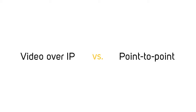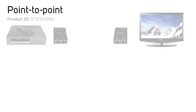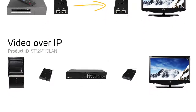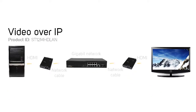Video over IP devices extend video and audio differently than point-to-point video extenders. Point-to-point video extenders transmit your video and audio wirelessly or using cables separate from your network. Video over IP devices convert your video and audio to IP packets so that the data can be transferred over your existing network, allowing you to take advantage of your network infrastructure and allowing for greater control and scalability.